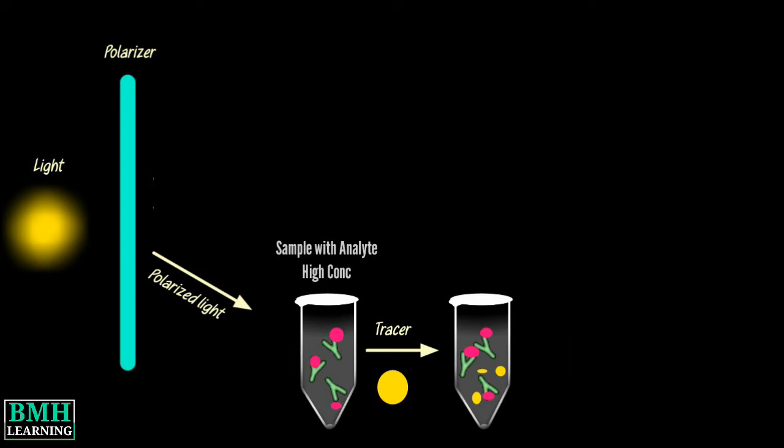After excitation, the tracer emits mostly depolarized light because the tracer tumbles rapidly during the time between excitation and emission.